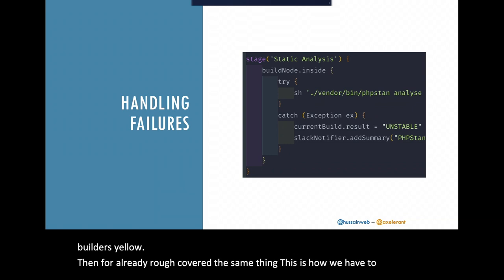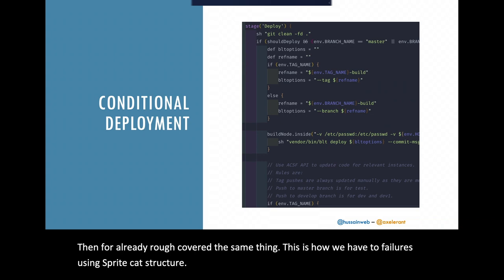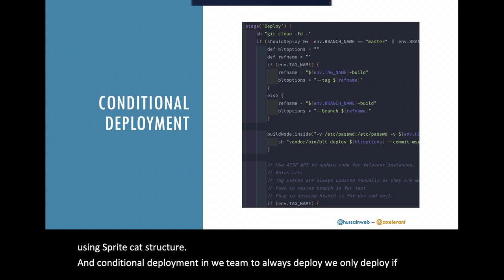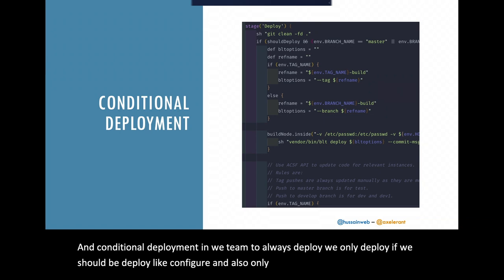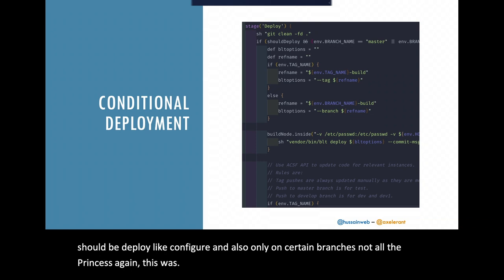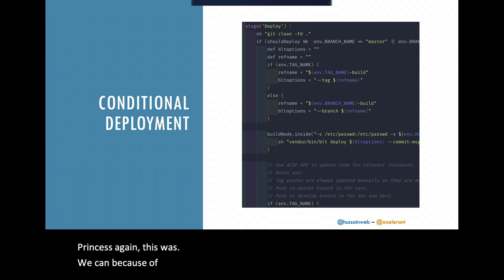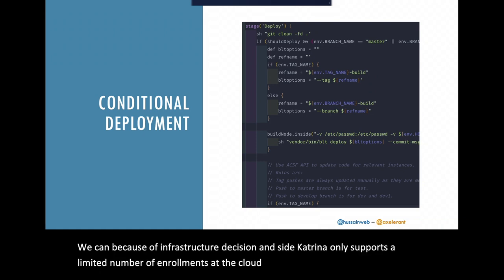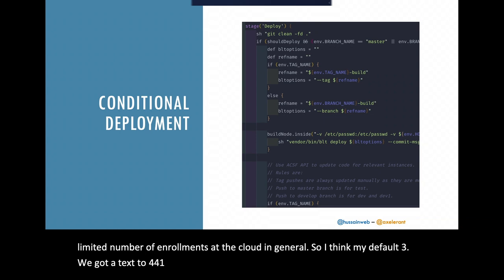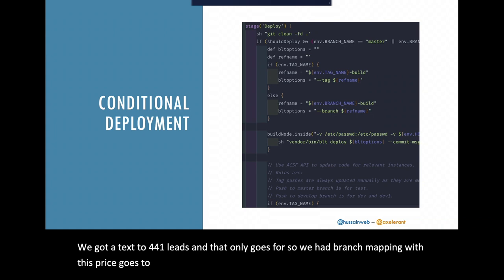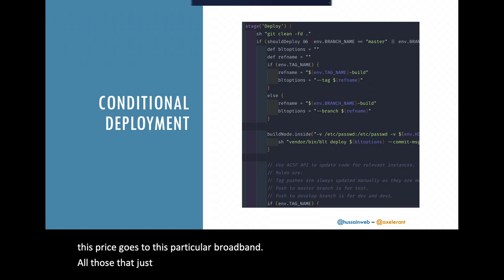We handled failures using the same try-catch structure throughout. For deployment, we only deployed when 'shouldDeploy' was true and only on certain branches — not all branches — because Acquia Site Factory only supports a limited number of environments (three by default, extended to four for our needs). We had a branch-to-environment mapping, and deployment itself was handled by BLT, Acquia's build and launch tool, for the Drupal backend.